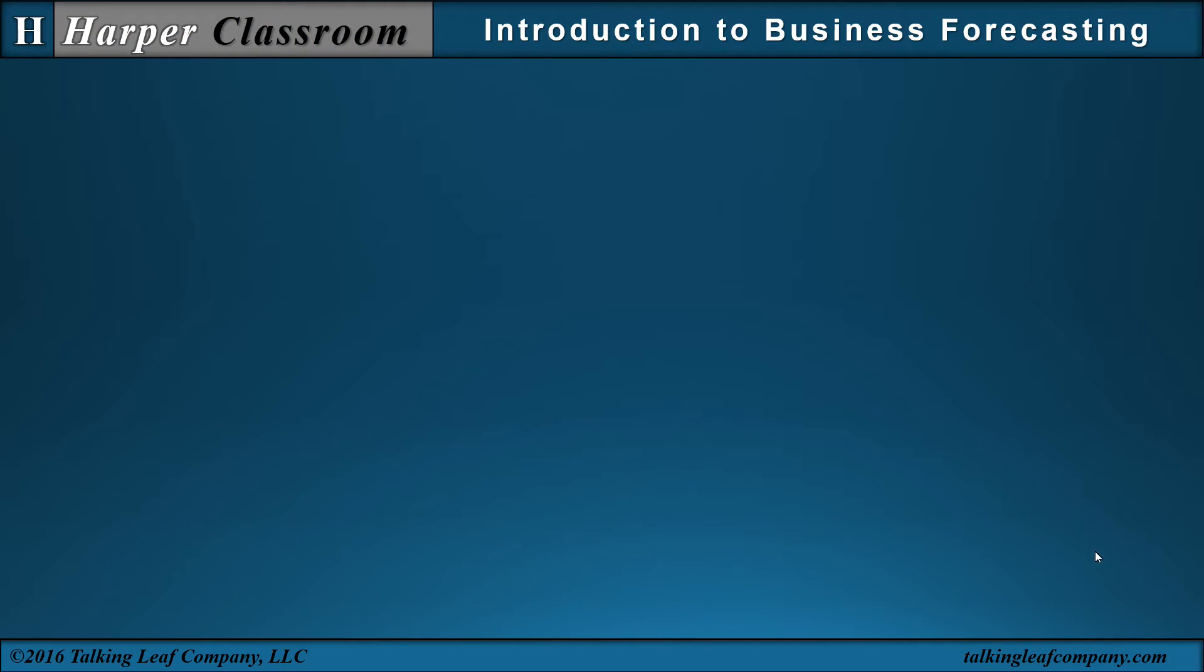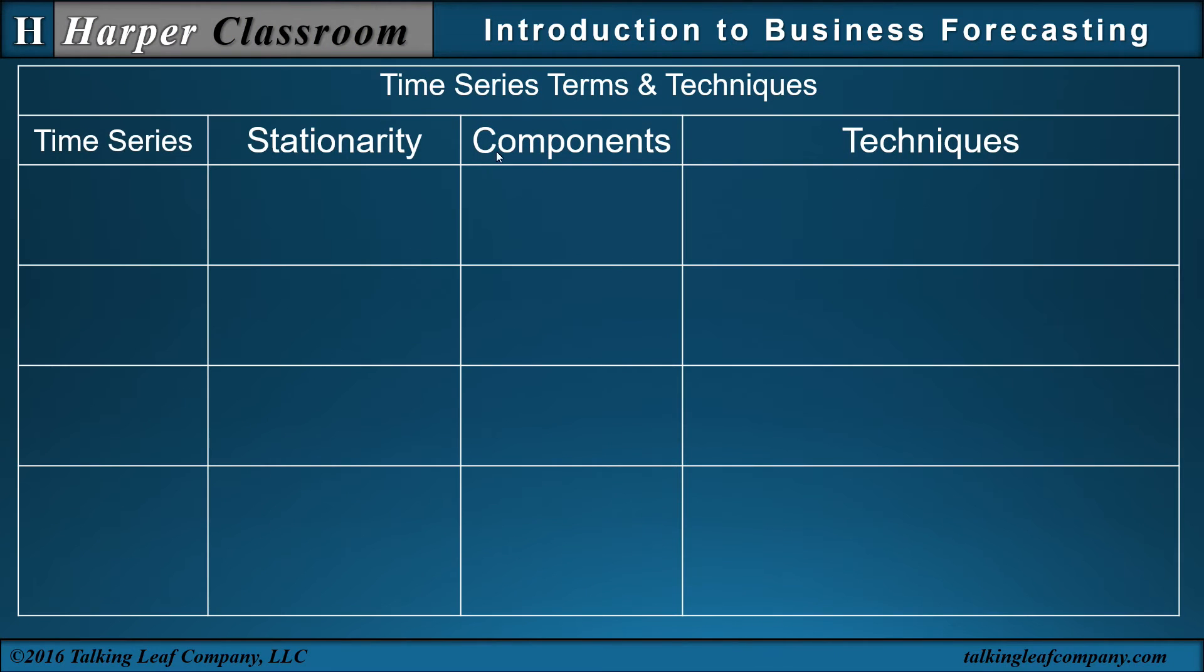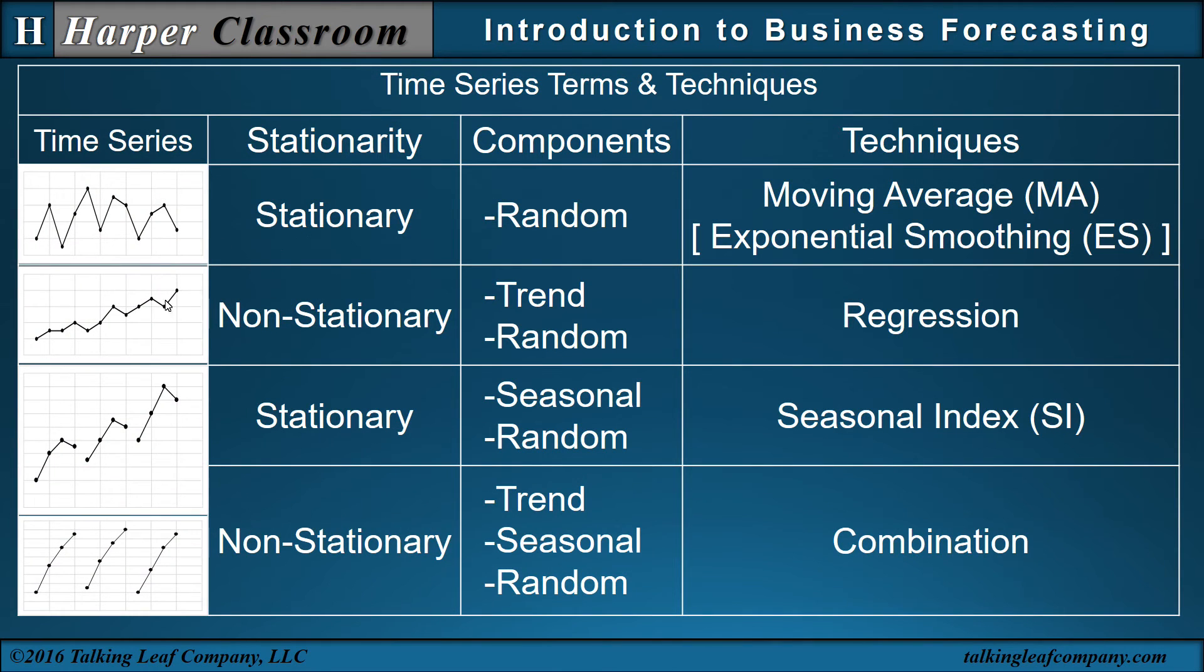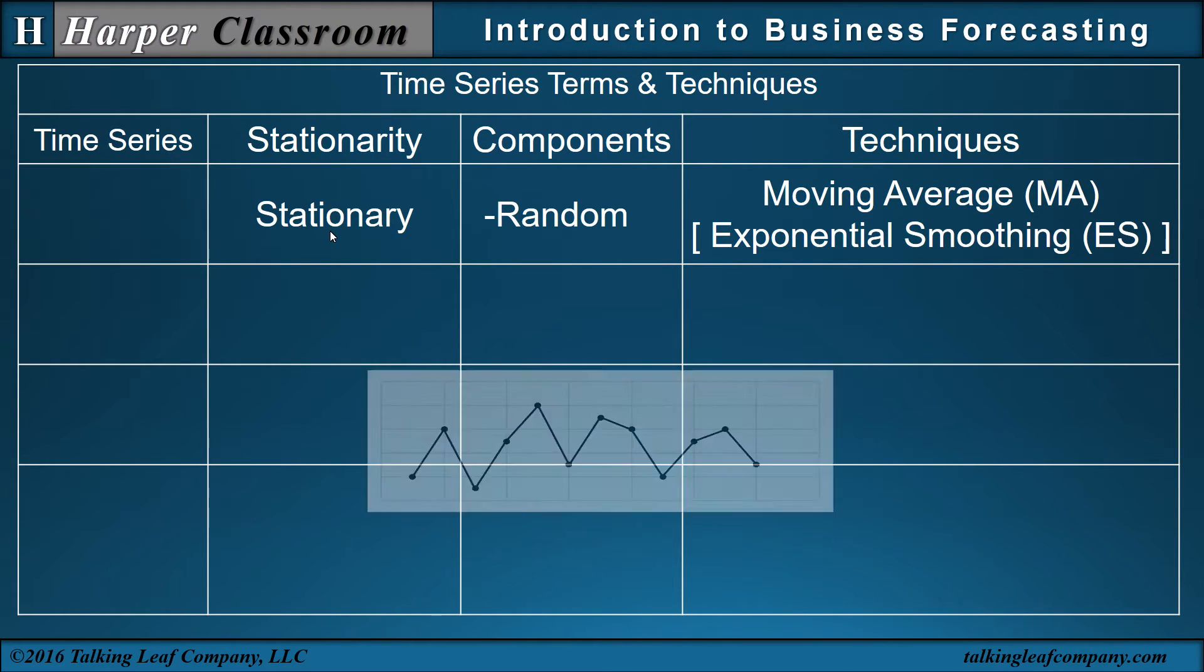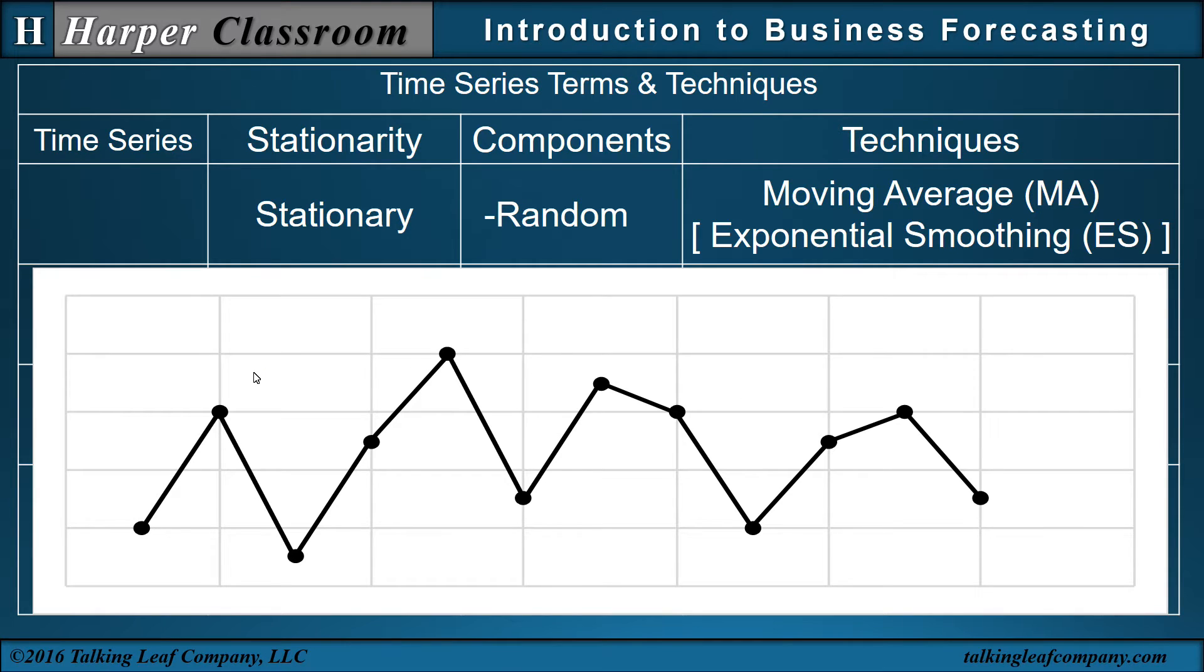So now, let's look at time series terms and techniques. I have a four by four table, and each row will represent a time series, and each column will represent a term that I'll define. Let's start with the first time series. In this time series, we look at the overall nature of this time series is level, so we call it a stationary time series.